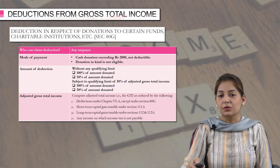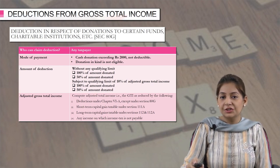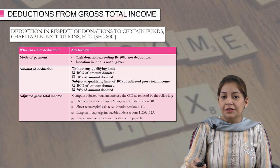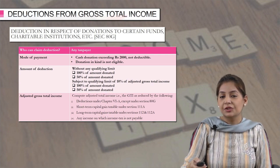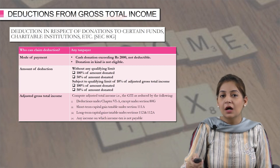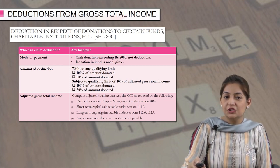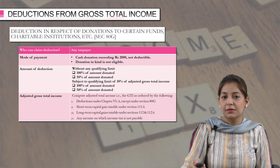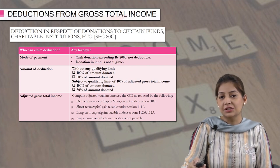How to calculate the adjusted GTI? First, calculate your gross total income. From that, deduct the following: deductions under Chapter 6A except under section 80G, so all deductions from 80C to 80U except 80G. Next, deduct any short-term capital gains taxable under section 111A. Then deduct LTCG under sections 112 and 112A. And lastly, if there is any income on which income tax is not payable, that will also be deducted to calculate the adjusted gross total income.